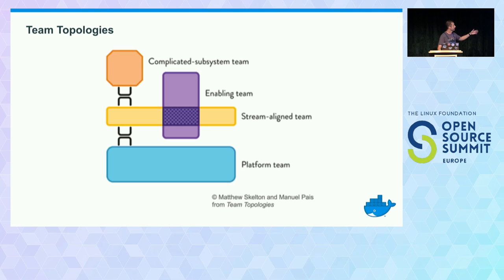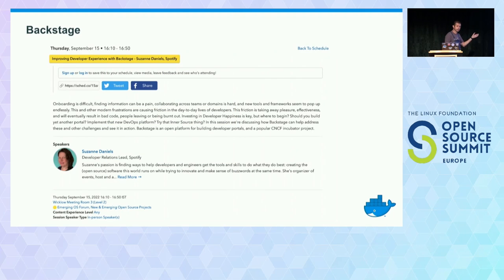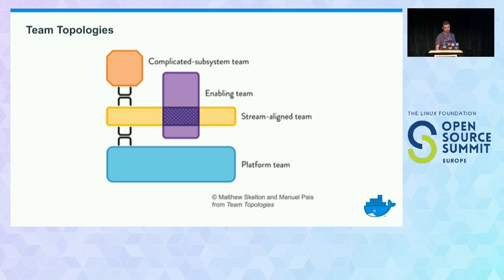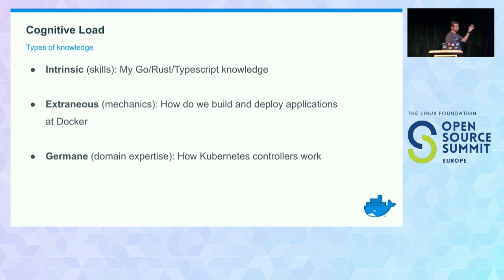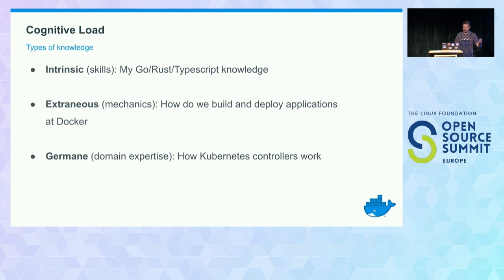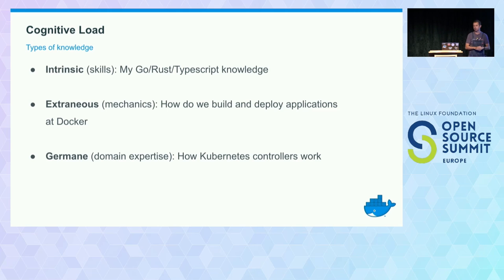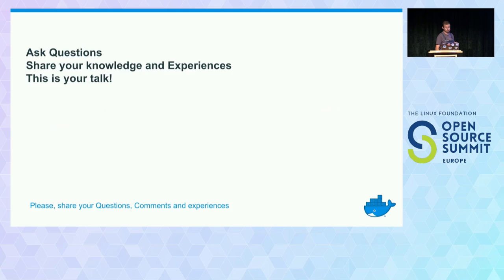Two things are very important right now in platform engineering to baseline the language: Backstage has a framework to create developer platforms, and team topologies defines the different teams — the platform team, the stream-aligned team, the enabling team, and so on. At 4 o'clock there's a talk by Susan if you want to learn more about Backstage. The other important concept is cognitive load — it is not complexity, it is perceived complexity by the person. There are three kinds of knowledge, including what is basically throwaway knowledge: things you cannot take with you when you change context, because how we do deployments at Docker is different from how you do deployments in your organization. The constraints of the context are different; patterns might be the same.